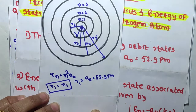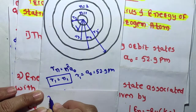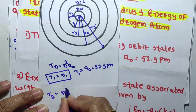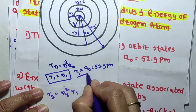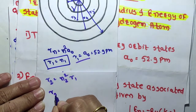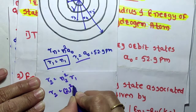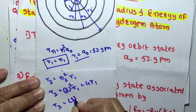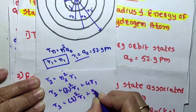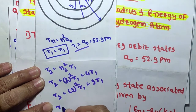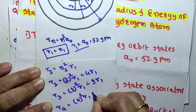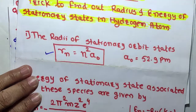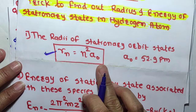When n = 1, r1 = a₀. To find r2: r2 = n² × a₀ = 2² × r1 = 4r1. Similarly, r3 = 3² × r1 = 9r1, and r4 = 4² × r1 = 16r1. So we can find the radius of any stationary state using the formula rn = n² × a₀.